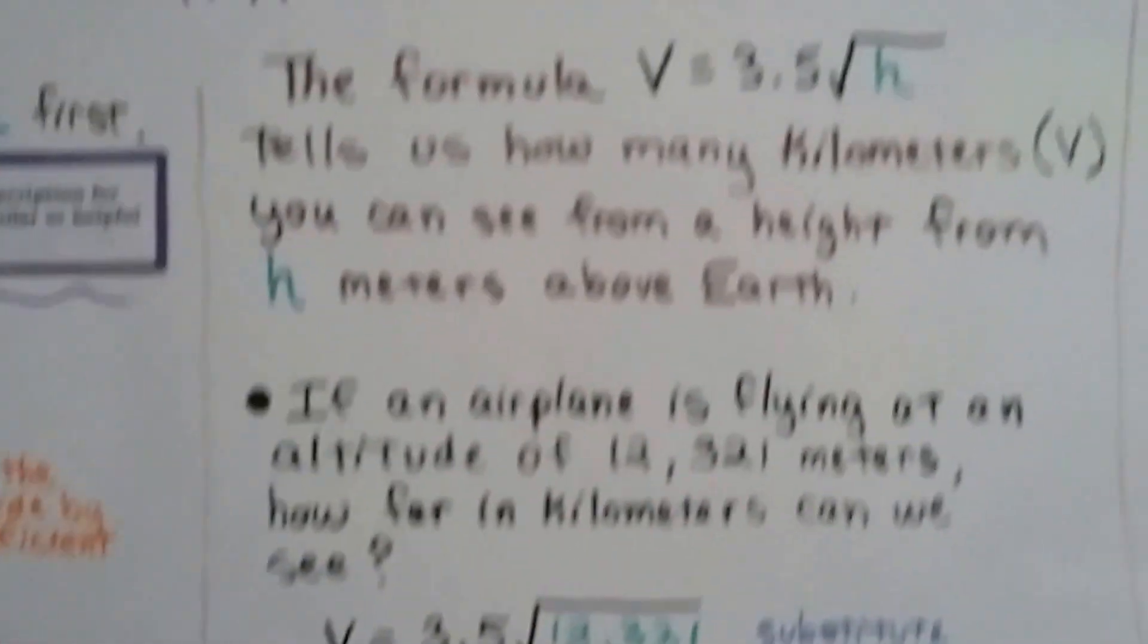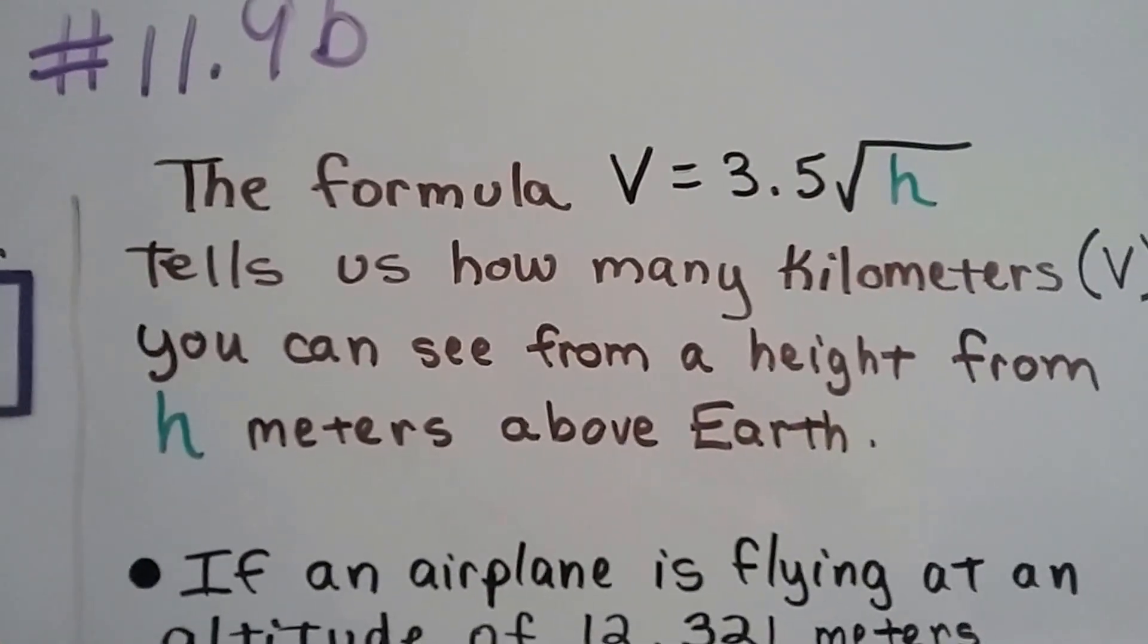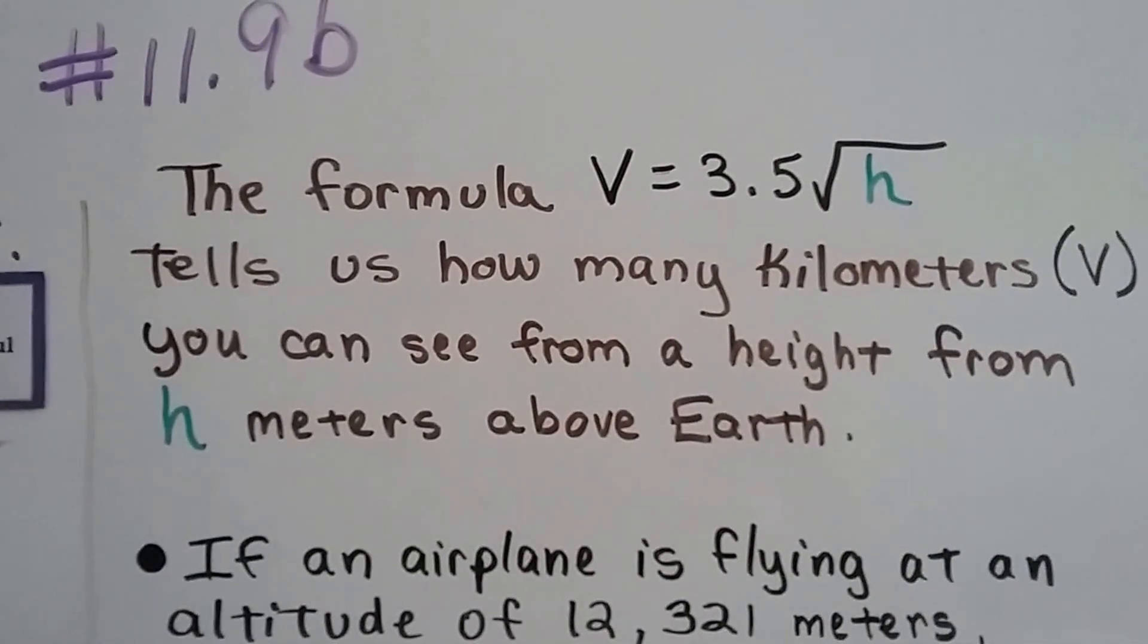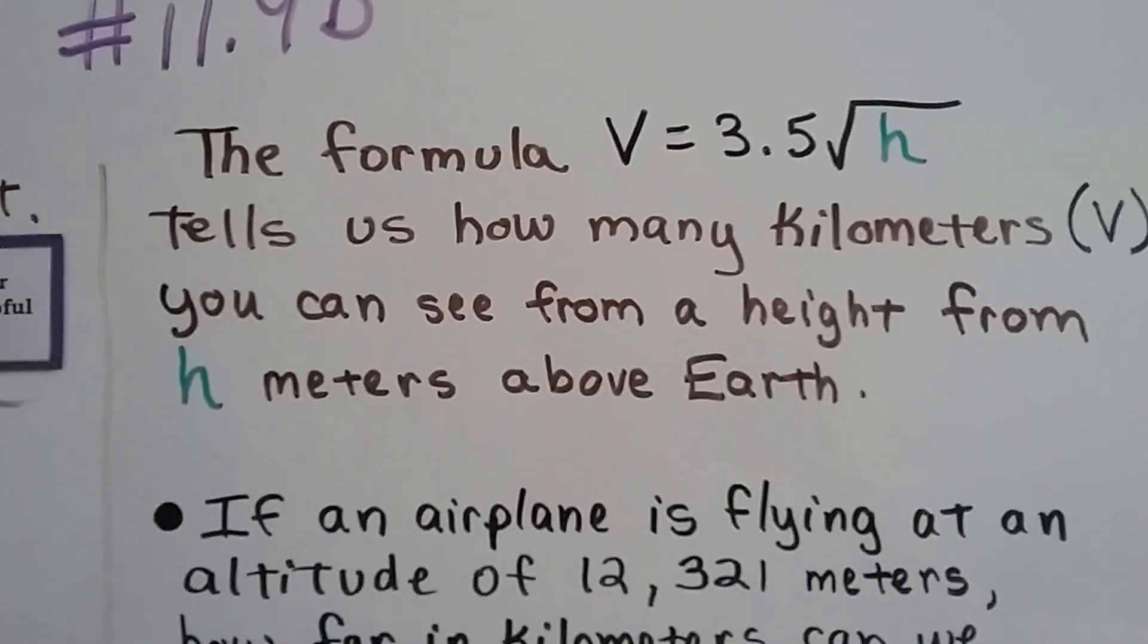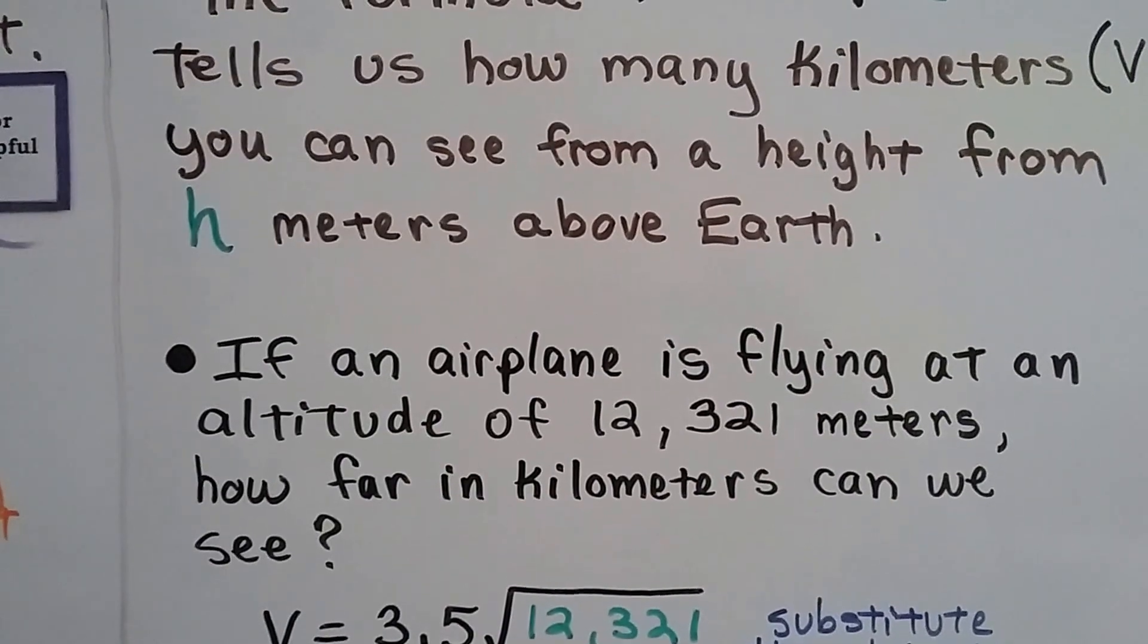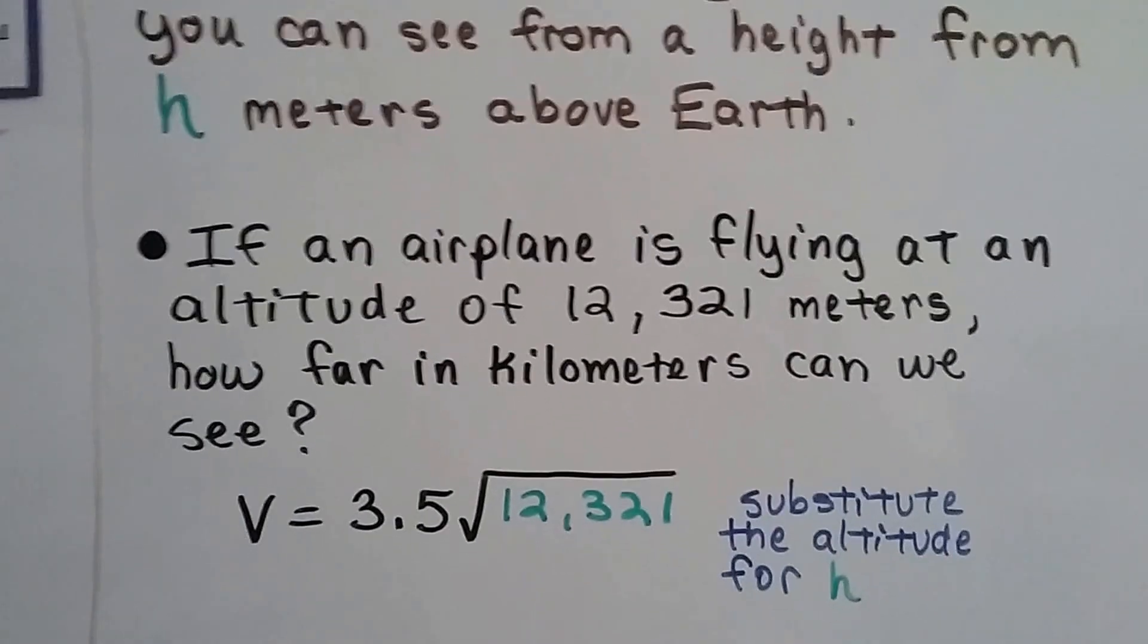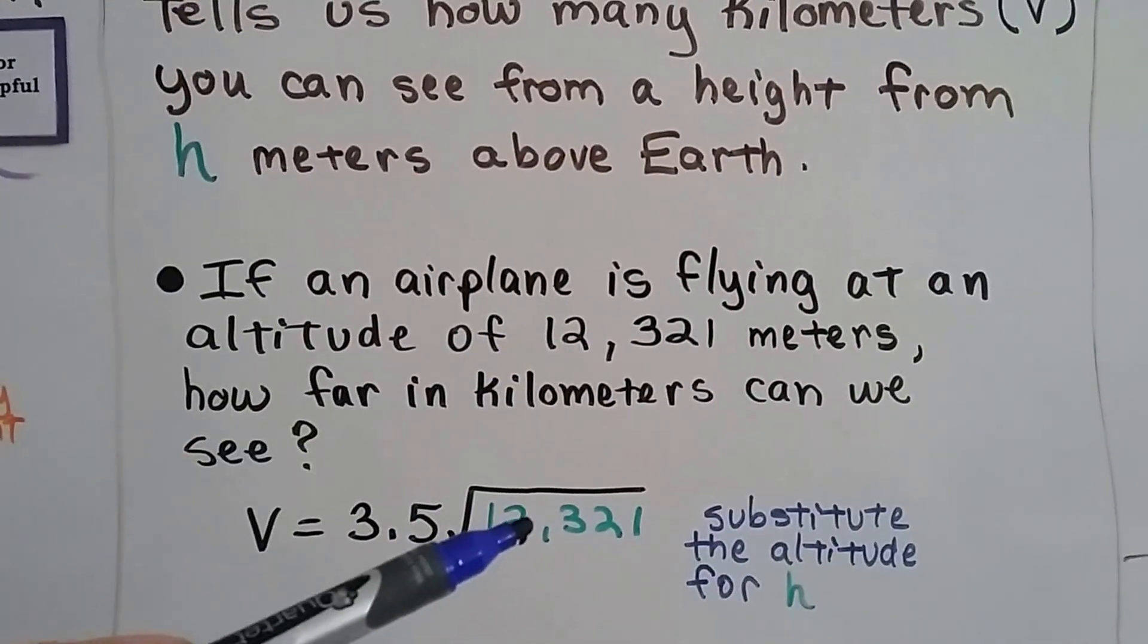The formula v equals 3.5 times the square root of h tells us how many kilometers, that's the v, that we can see from the height of h meters above Earth. If an airplane is flying at an altitude of 12,321 meters, how far in kilometers can we see?